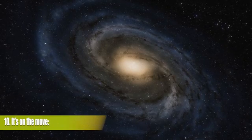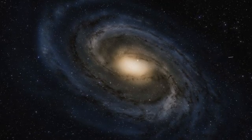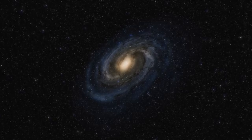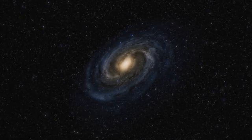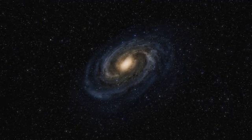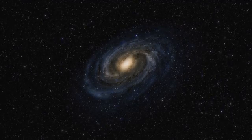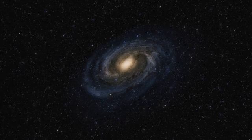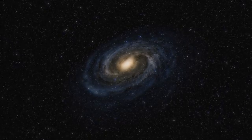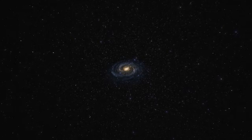10. It's on the move. Along with everything else in the universe, the Milky Way is traveling through space. The Milky Way is a component of the Local Group, which is moving in relation to the Cosmic Microwave Background, which is the radiation left over from the Big Bang. The Earth revolves around the Sun, the Sun revolves around the Milky Way.